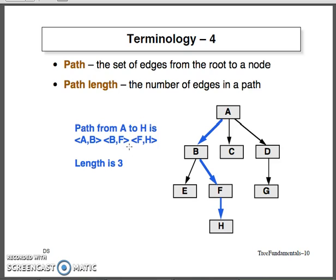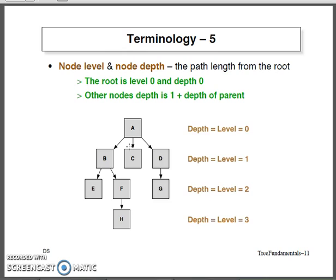Coming to the terminology of path and path length: a path represents the number of edges from a specific node to another node — for example, from source to destination. Here you see nodes A-B, B-F, and F-H which form a path. The number of edges, which is three in this case, is termed as the path length. There are also different levels for a node, which is called node depth. The root node is always at level 0 with a depth value of 0, and as we move down from the root, the depth or level increases by 1 each time — 0, 1, 2, 3, and so on.